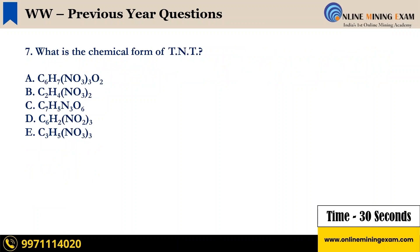What is the chemical formula of TNT? A. C6H7NO3·3O2. B. C2H4NO3 whole 2. C. C7H5N3O6. D. C6H2(NO2)3. E. C3H5NO3 whole 3. Your time starts now.